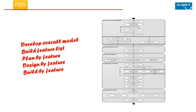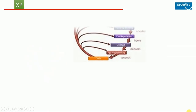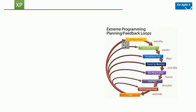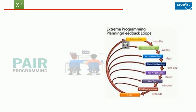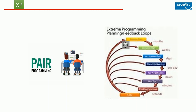XP stands for Extreme Programming. The emphasis is on improving the quality of software and being responsive to changing customer needs. XP is also generally called pair programming, meaning two people sit together and jointly work — while one writes the code the other reviews it right then and there. This involves extensive code reviews, bringing very high quality standards. Coding standards are taken to an extreme level, hence the name.